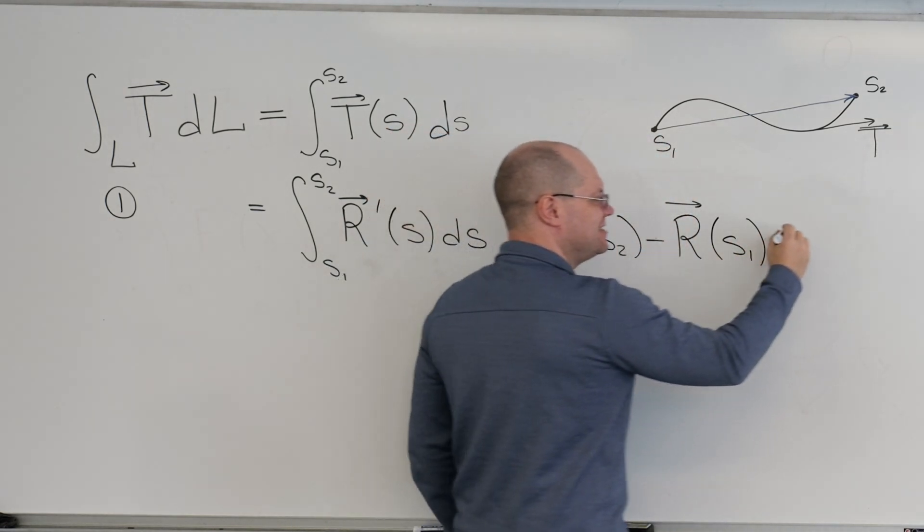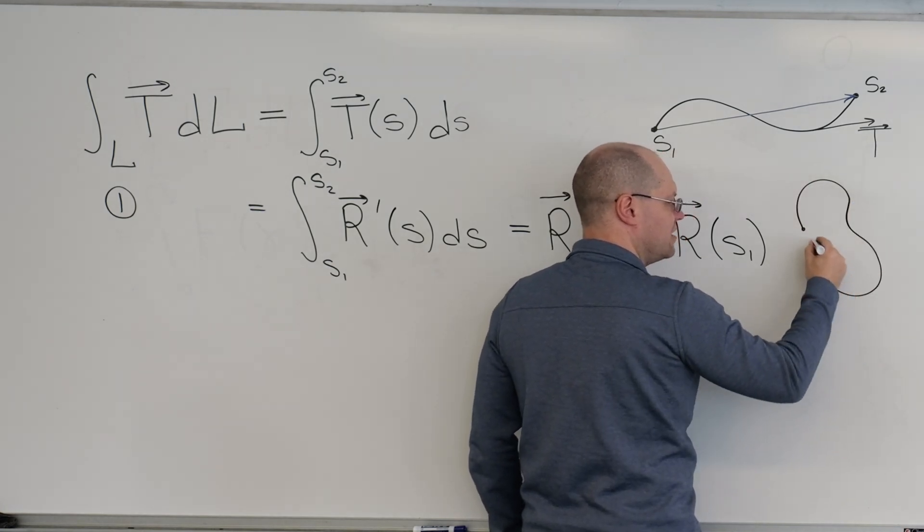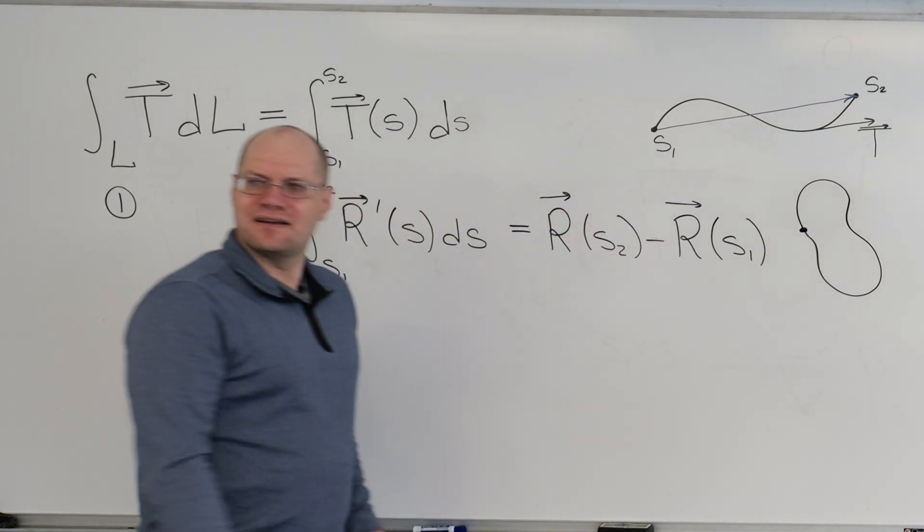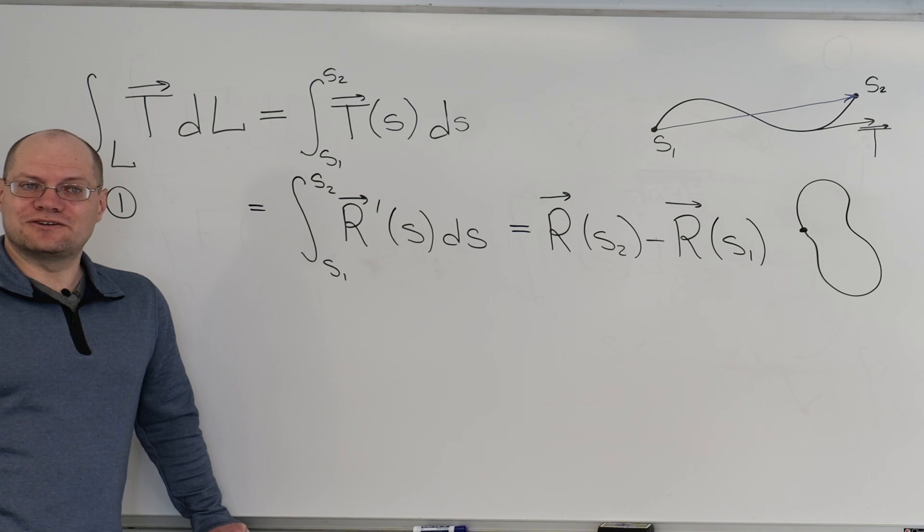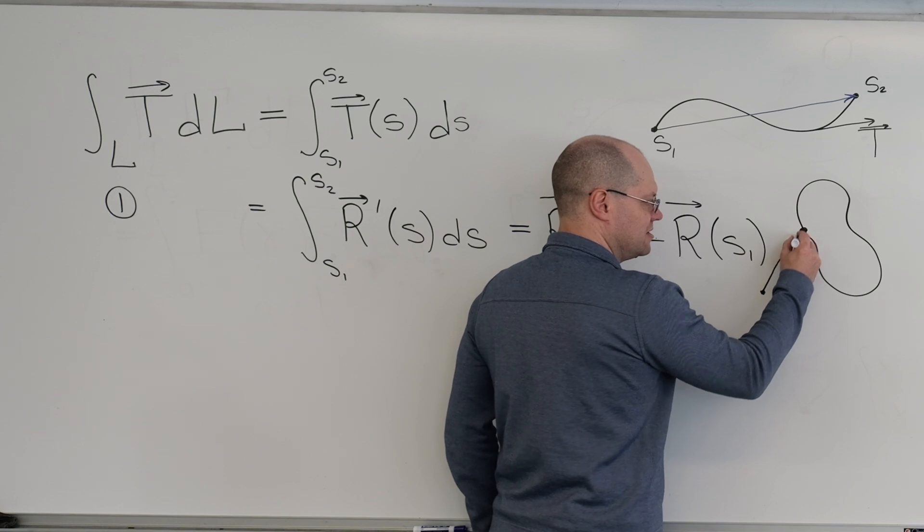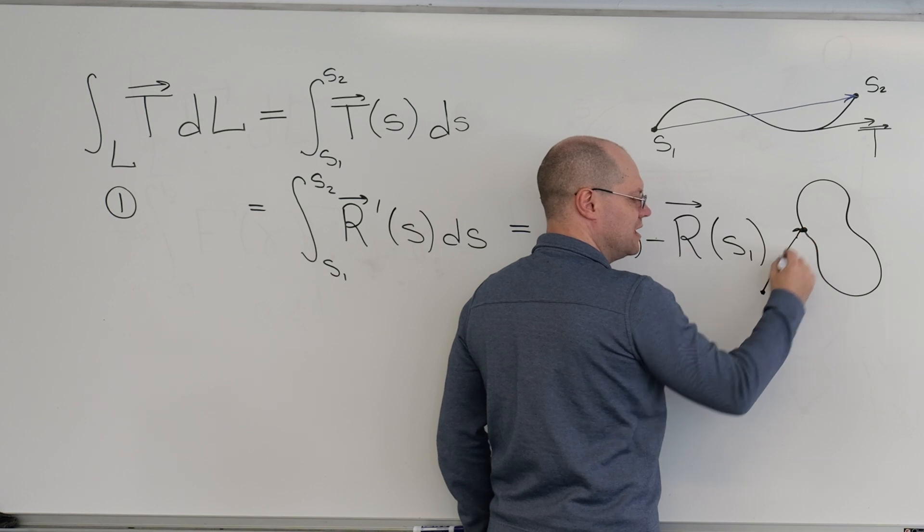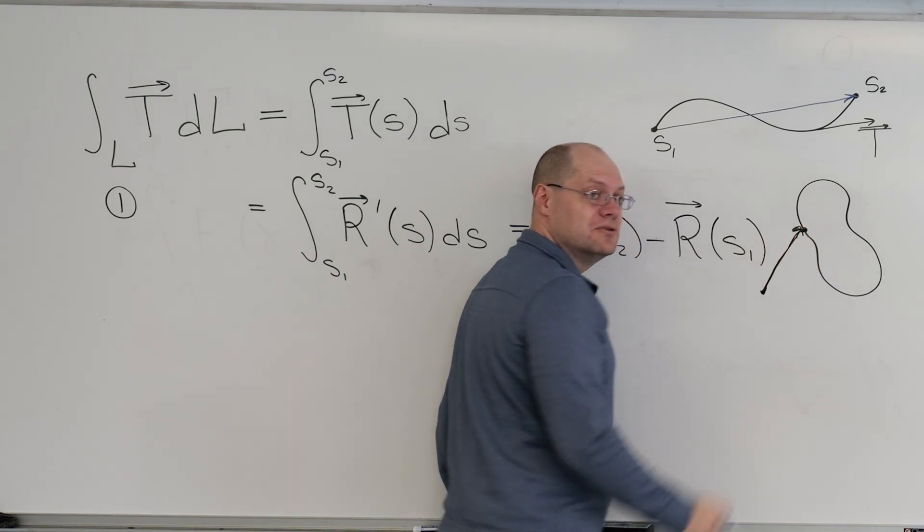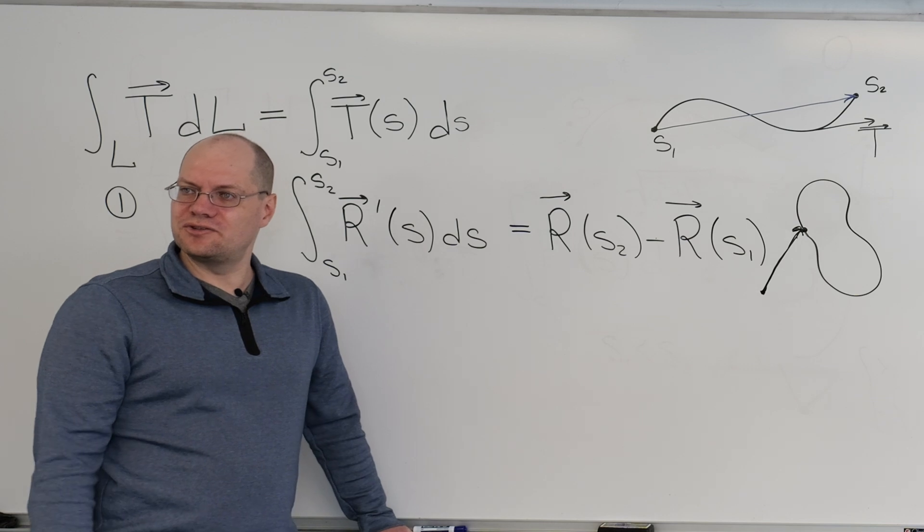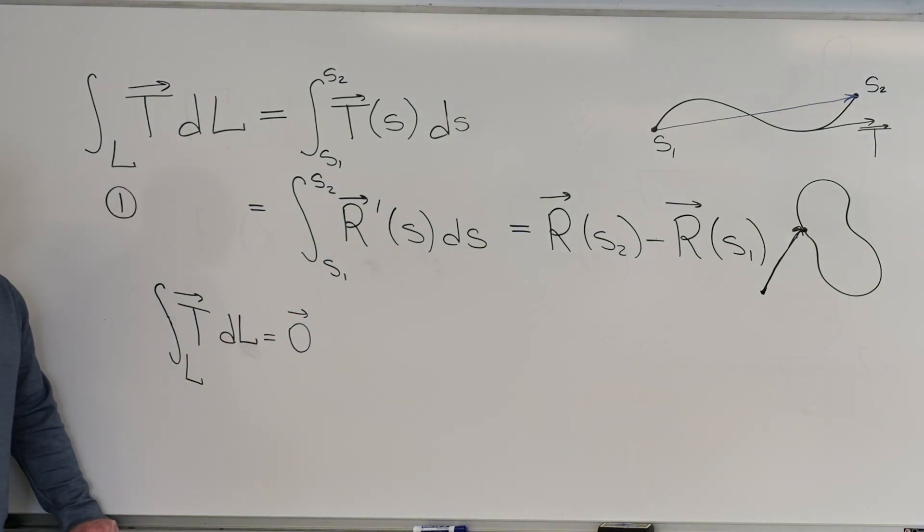Question is, special case, when the curve is closed. So it starts and ends at the same point. Then what is the integral? Zero, of course, because R of S1. So if we pick an arbitrary origin, this is R of S1. And then R varies, varies, varies. And then you're right here. And this is also R of S2. So R of S2 equals R of S1. For a closed curve, over a closed curve, the integral of the unit tangent is zero.